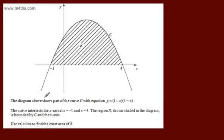We're told the diagram above shows part of the curve C with equation y is equal to 1 plus x multiplied by 4 minus x. The curve intersects the x-axis at x is equal to minus 1, and x is equal to 4.